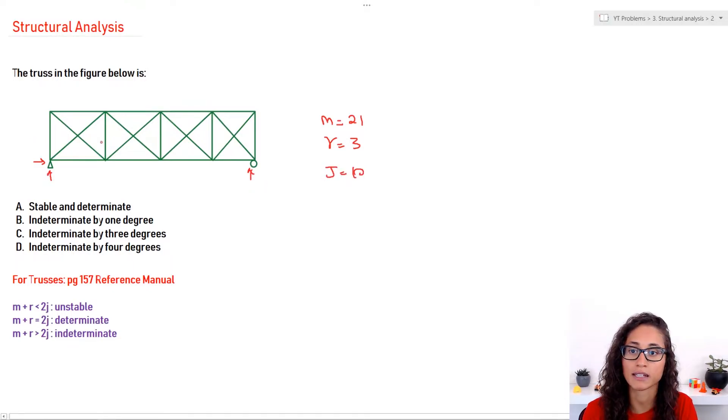So, let me show you guys the members, how we usually calculate them. So, this would be considered a member. This is a member. So, we have 1, 2, 3, 4, 5, 6, 7, 8, 9, 10, 11, 12, 13. Anyways, I got lost. But you guys should count it. You should get 21.